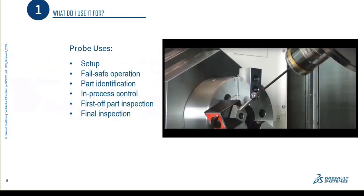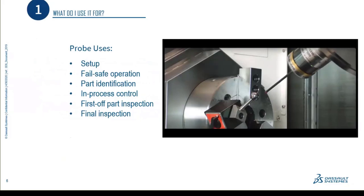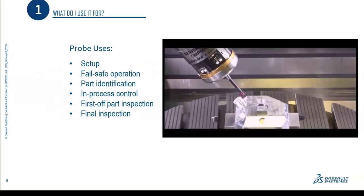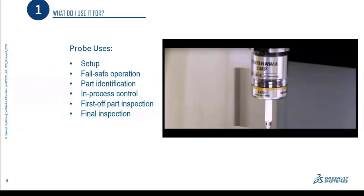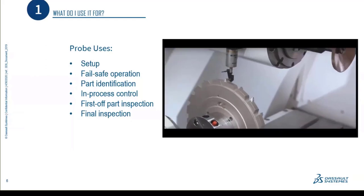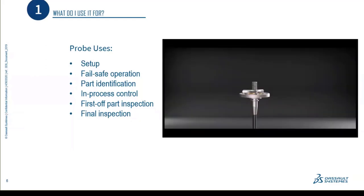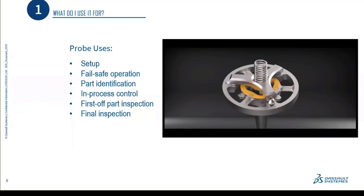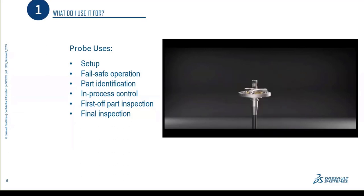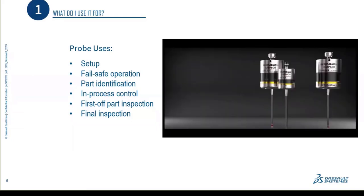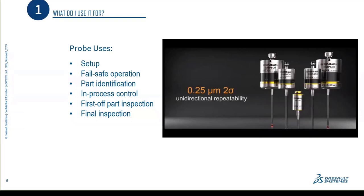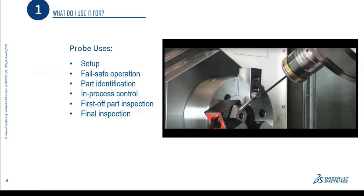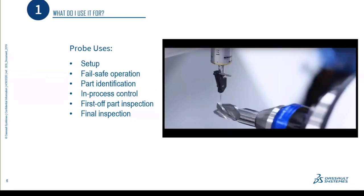General uses for probing include: setups like creating work coordinate offsets, setting your G54/G55; fail-safe operations, such as sending a probe to ensure a hole is actually there before running a tap; part identification by gathering dimensional data; in-process control like checking a machined feature for dimensional accuracy so you can adjust and correct out-of-tolerance features mid-process — for example, if you machine a boss and it's too big, you can probe and remachine it. You also have first-off part inspection and final inspection.